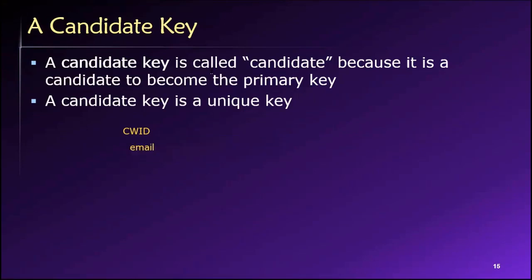An email address is unique — every single email address is unique across the entire internet. My email address at the university is dsoper@fullerton.edu. Nobody else in the world has that email address. The design of the internet precludes anyone else from having it — it would be impossible to route email if two accounts had exactly the same name.